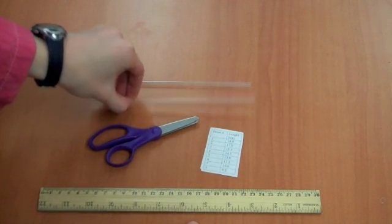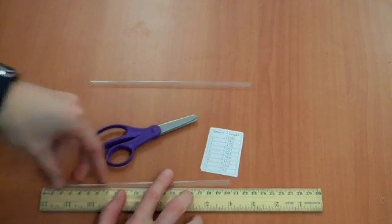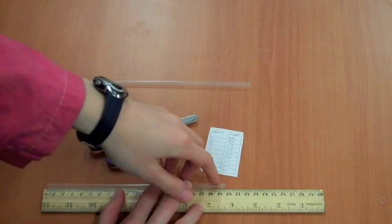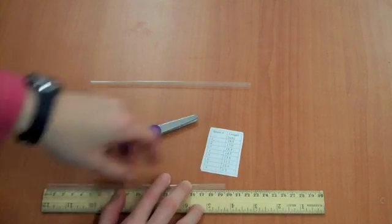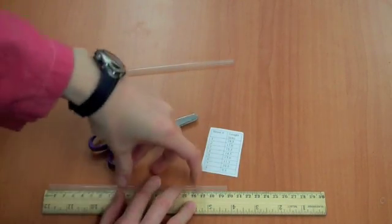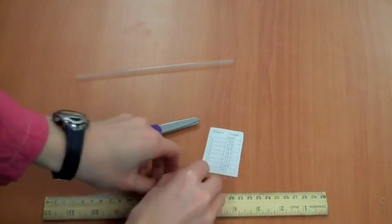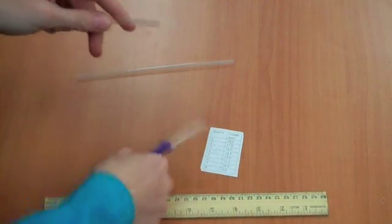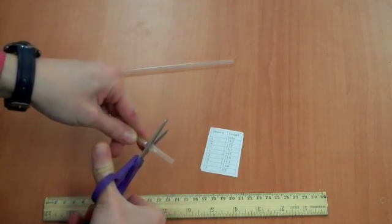The first straw has to be 19 and a half centimeters, and if you're lucky, the straws from the store will already be that length. And the next one will be 17 centimeters. So, you measure that there, you can fold it over, and then cut it there.